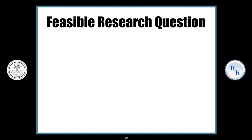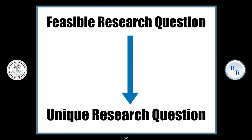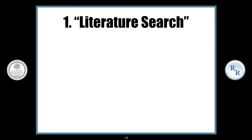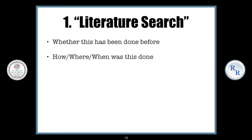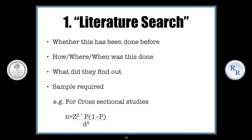A feasible research question then needs to lead to a unique research question. To come up with a unique research question, you need to ask yourself two things. The first is to conduct a literature search to answer a bunch of questions: whether this has been done before, how, where, when was it done, and what did they find out. And last but not least, for cross-sectional studies, you can even find out the sample size required. More on this in another video.